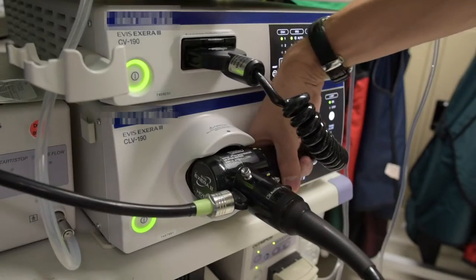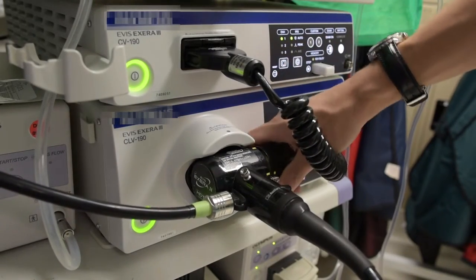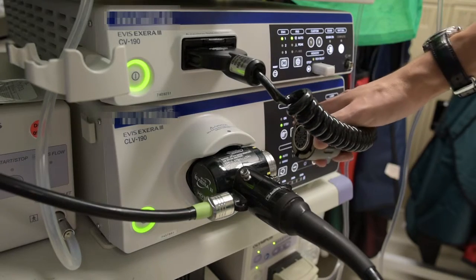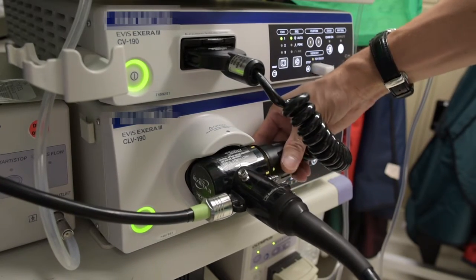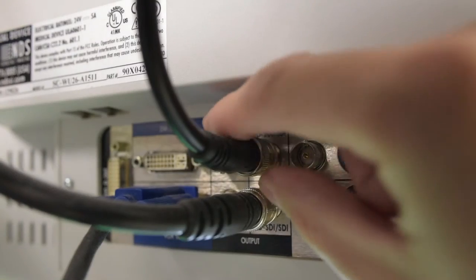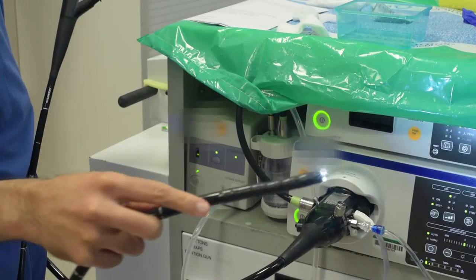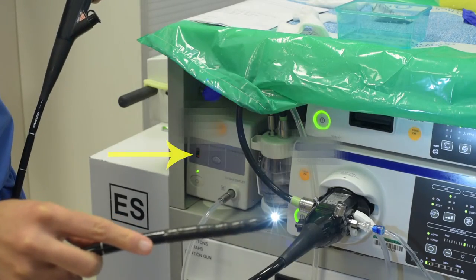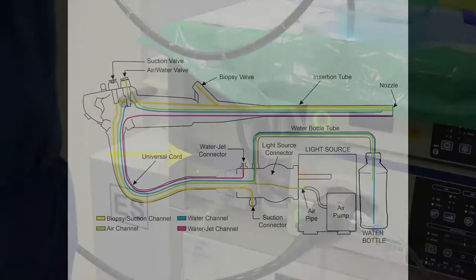We talk about how the scope is connected and problems that might occur with later model as well as newer model endoscopes. We talk about the monitor and its various connections. We also address air insufflation and CO2 insufflation, as well as problems that might occur with the air water channel.